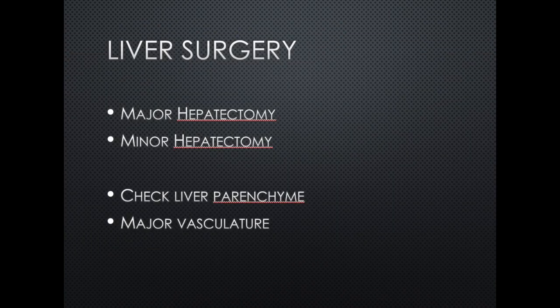For liver resection, major hepatectomy is often defined as resection of three or more segments. Minor hepatectomy is resection of two or fewer, or sometimes tumorectomy. When there is no anastomosis such as hepaticojejunostomy, the main thing to check in the postoperative CT is the state of the liver parenchyma and the major vasculature.